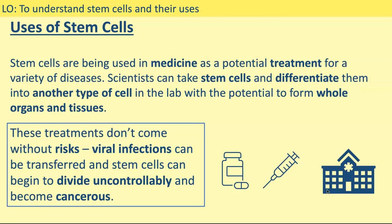Some of the uses of stem cells are that, because they can differentiate into different types of cells, they can actually be used in medicine as a potential treatment for lots of different diseases. Scientists can take stem cells and differentiate them into another type of cell in the lab, which means we've got the potential to form whole organs and tissues. The treatments do come with risk though — viral infections can be transferred and stem cells can begin to divide uncontrollably and become cancerous.